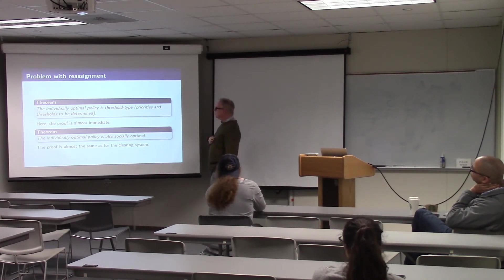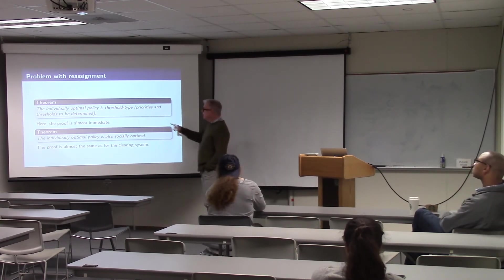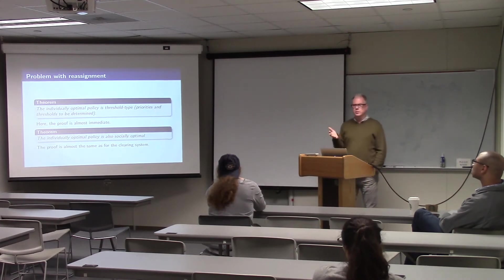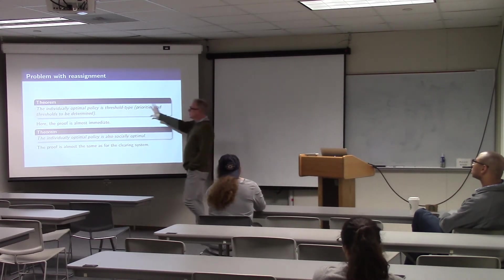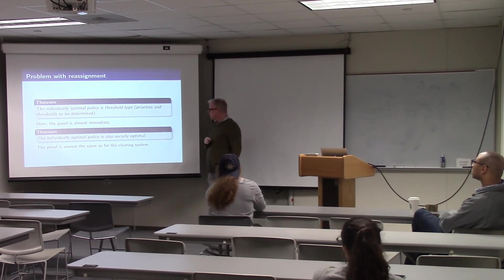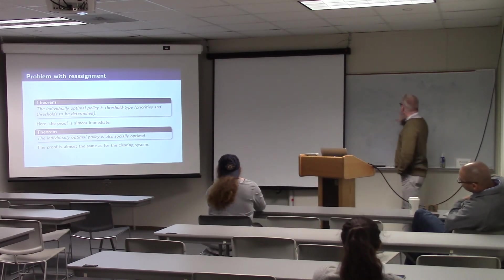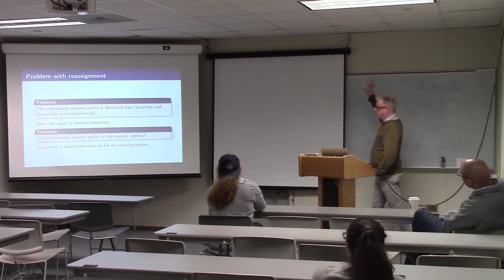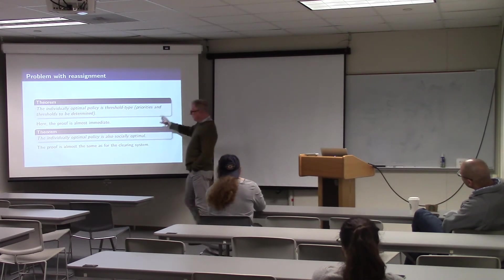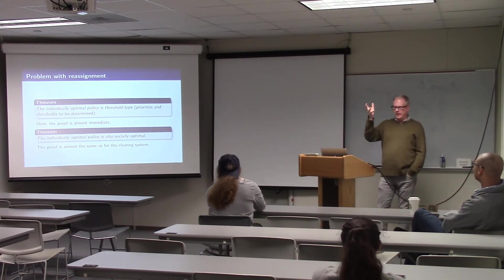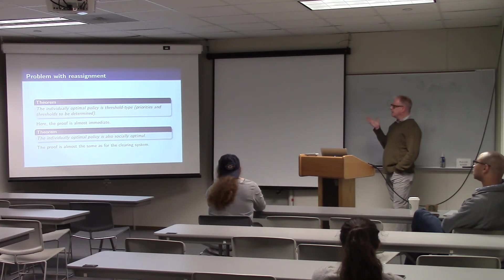The individually optimal policy is threshold type — priorities and thresholds to be determined. This proof is almost immediate: it essentially looks like the setting without arrivals. The individually optimal policy is also socially optimal, with a proof almost the same as for the clearing system. It's this idea that the most recent arrival is where I deviate, and when I deviate from that the last arrival wants to be individually optimal.